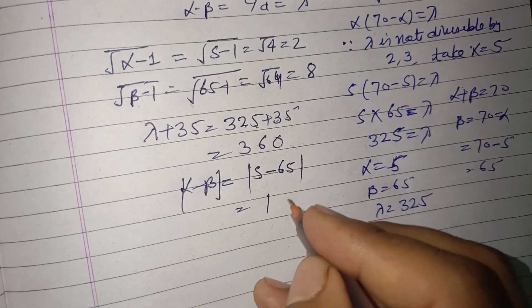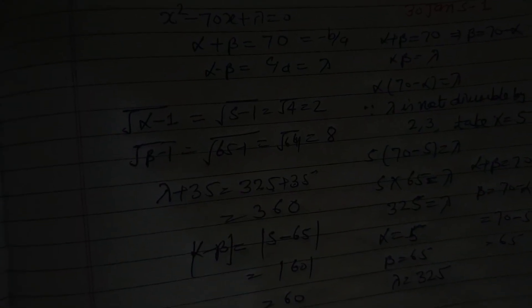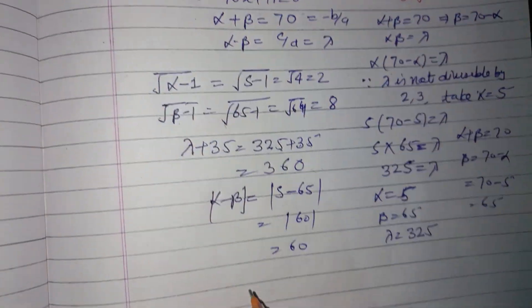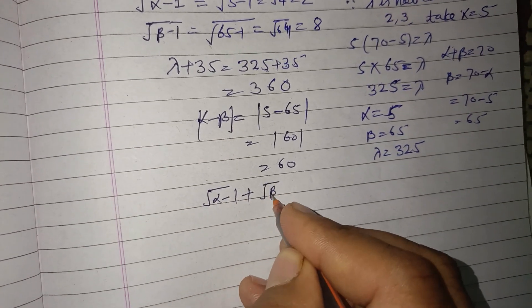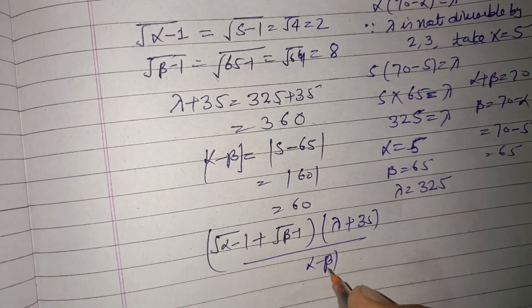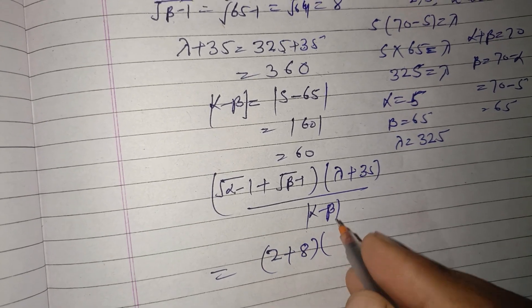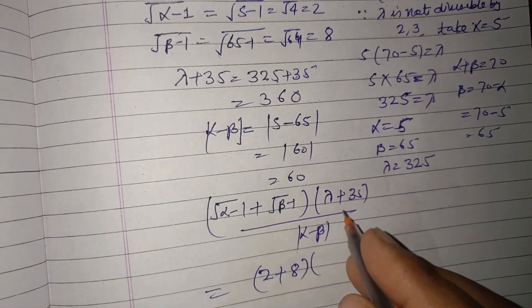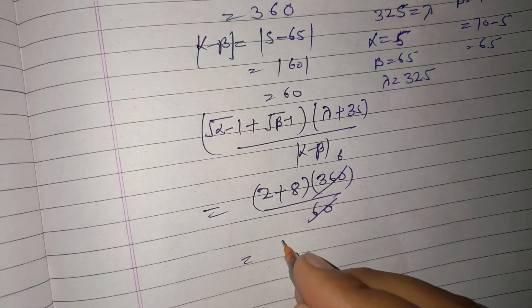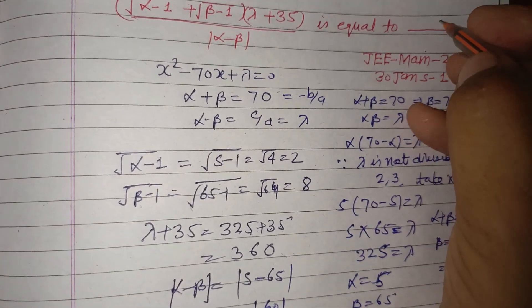Putting these values into the expression: [√(alpha - 1) + √(beta - 1)] × (lambda + 35) / |alpha - beta| = [2 + 8] × 360 / 60. This equals 10 × 6 = 60. So 60 is the correct answer to this question.